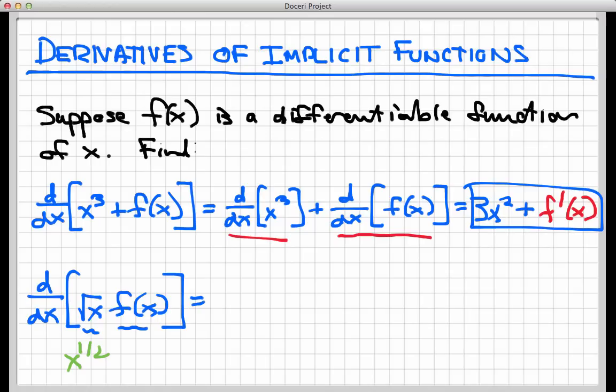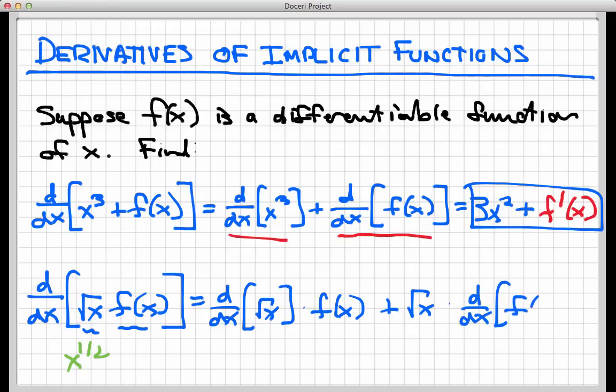So I would use the product rule to write this out. I would need to take the derivative with respect to x of the first function, and multiply the result times the second, plus take the first function and multiply it times the derivative of the second. That hasn't changed. That is the same product rule we have been using for quite a bit now. What is going to change I think is going to be right here. This is the only thing that's really different between this problem and other product rule problems you've seen in the past.